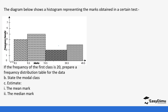If the frequency of the first class is 20, prepare a frequency distribution table for the data, state the modal class, estimate the mean mark, and the median mark. The first thing we are going to do is create our table. We start with the marks — using upper and lower limits. The first interval is 4.5 to 9.5, the second is 9.5 to 19.5, the third is 19.5 to 39.5, and finally 39.5 to 49.5. Next we find the class width.